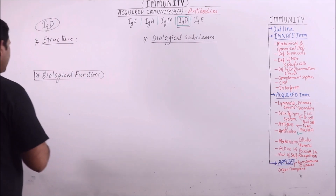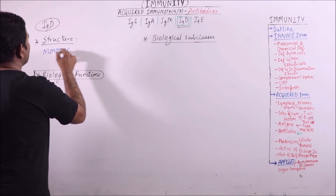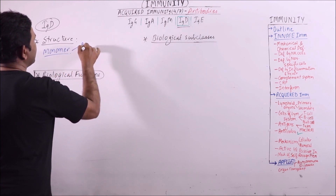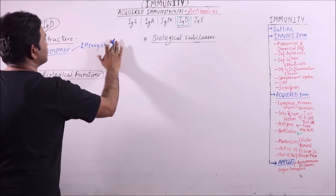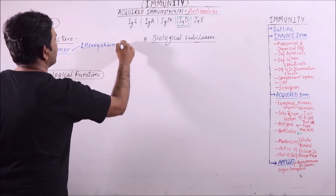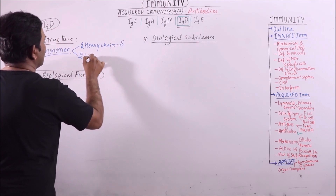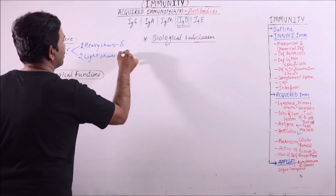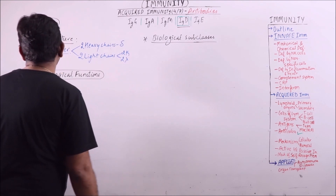Immunoglobulin D exists as a monomer and it has 2 heavy chains of the delta type and 2 light chains of either 2 kappa or 2 lambda.